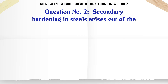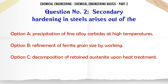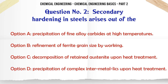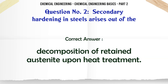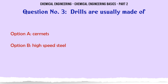Secondary hardening in steels arises out of: a) precipitation of fine alloy carbides at high temperatures, b) refinement of ferrite grain size by working, c) decomposition of retained austenite upon heat treatment, d) precipitation of complex intermetallics upon heat treatment. The correct answer is: decomposition of retained austenite upon heat treatment.